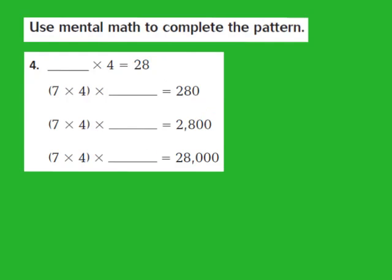Let's check out question number 4 together. Our job is to use mental math to complete the pattern. Question number 4 looks a little different — this time we're missing the first factor in our multiplication problem. We have blank times 4 equals 28. From my knowledge of multiplication facts, I know that 7 times 4 gives me 28, and that is my basic fact.